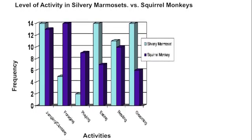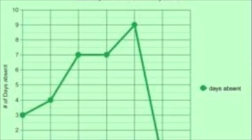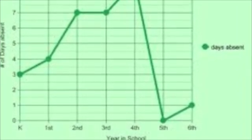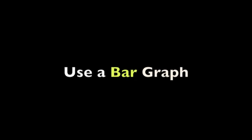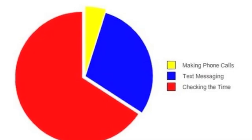If you guessed double bar graph, you were correct. We're comparing not only the activities, but also the two different types of monkeys, so bar graph wins. To wrap up: for changes over time, use a line graph; to compare different categories, use a bar graph; and to compare slices of a whole, make a pie chart. Happy graphing, everybody!